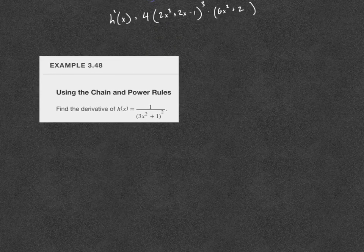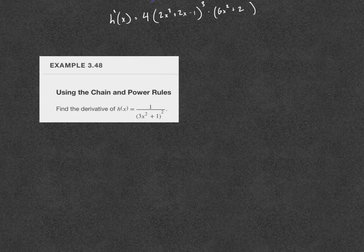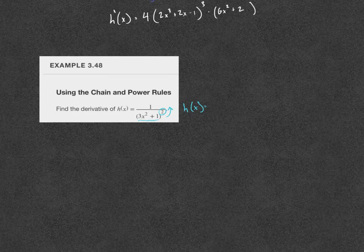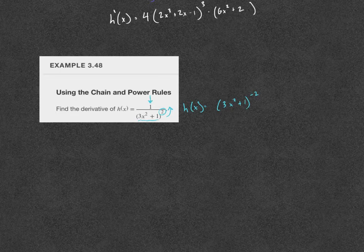Here's another one. This one looks like it needs the quotient rule because we have a fraction, but you can avoid it sometimes if you're careful. If I write h of x a little bit differently, I can get away without using the quotient rule. I'll take the (3x² + 1) squared in the denominator and bring it up with a negative exponent. This is especially useful when your numerator is 1 — it really helps to simplify the process.